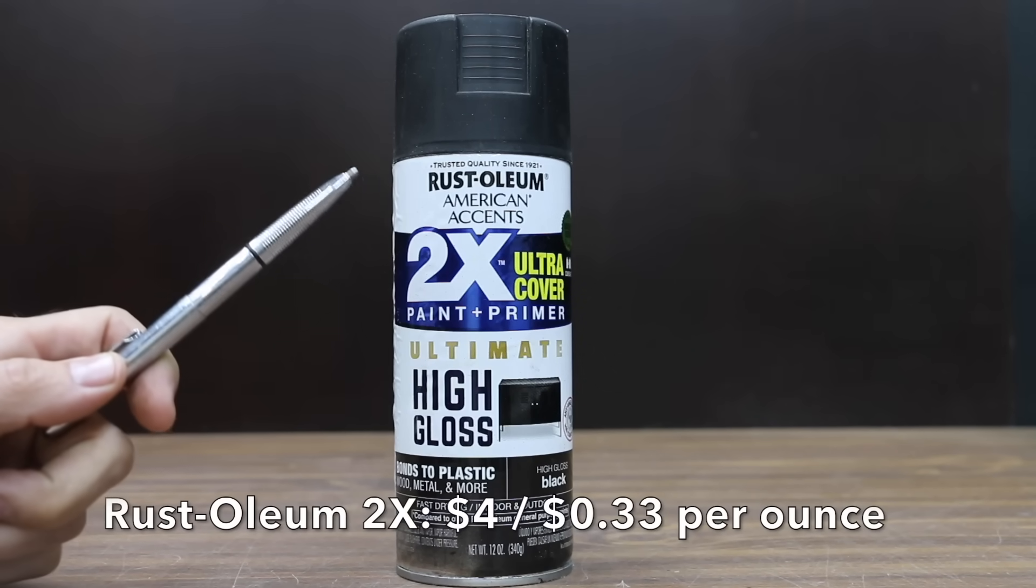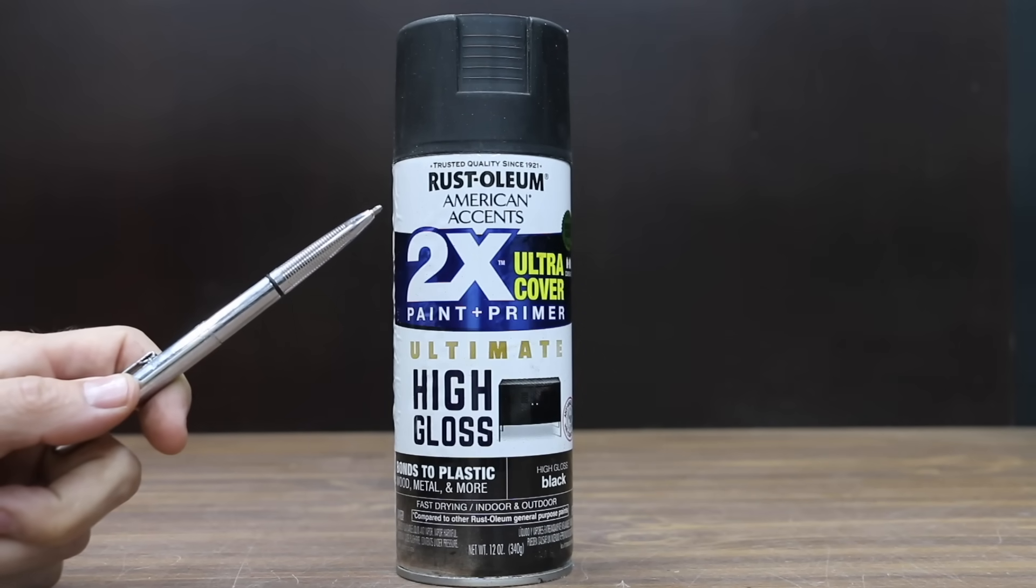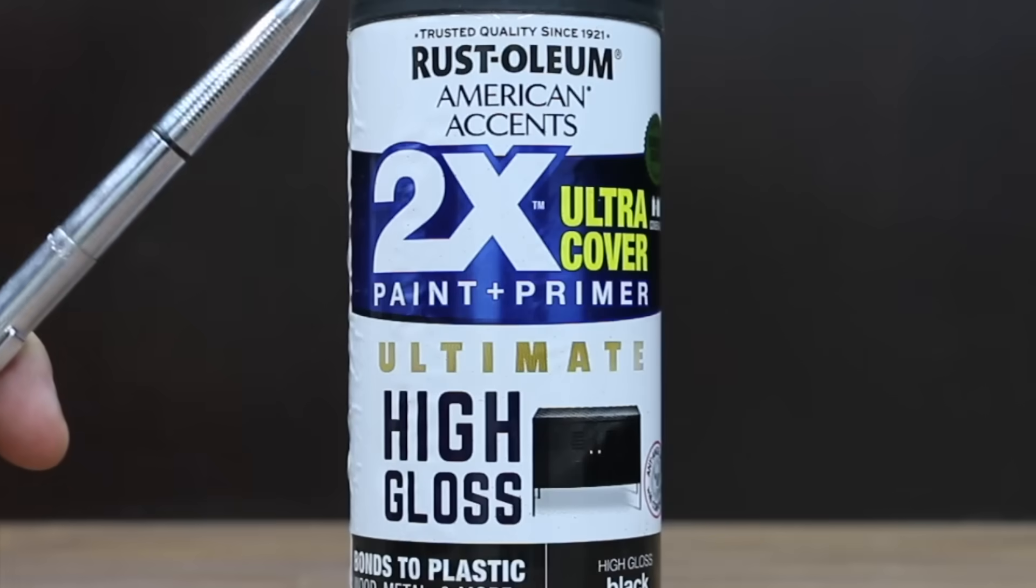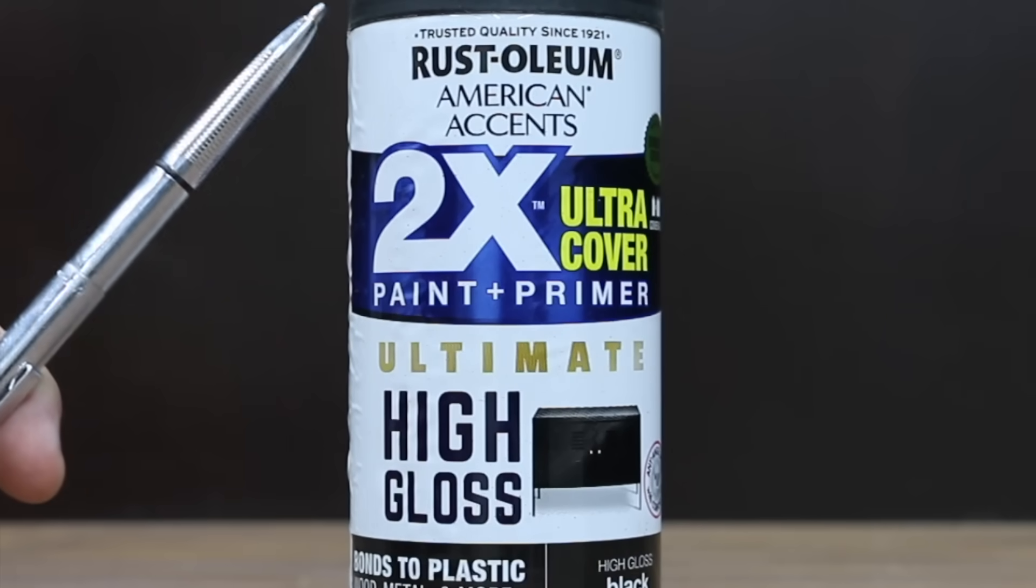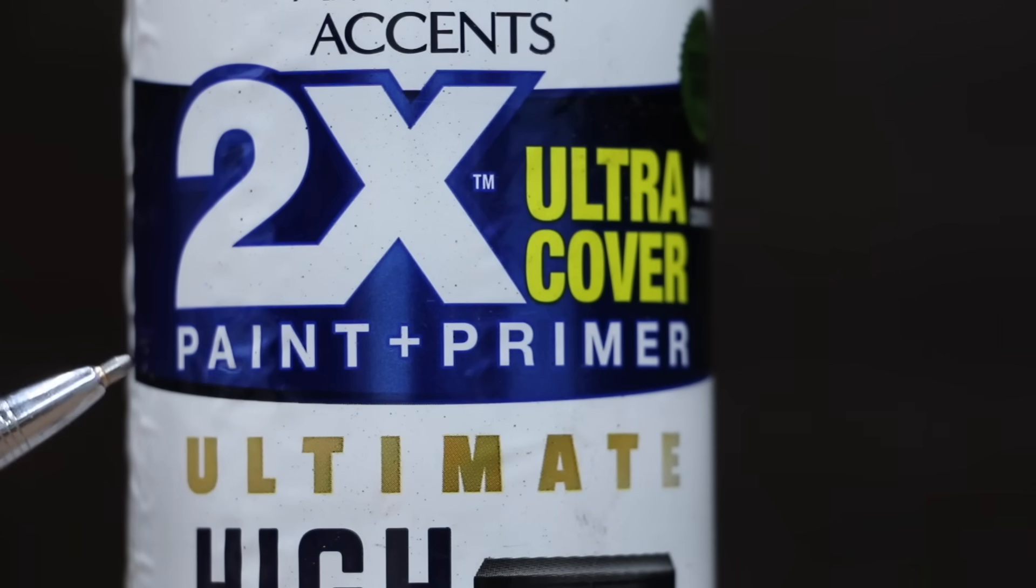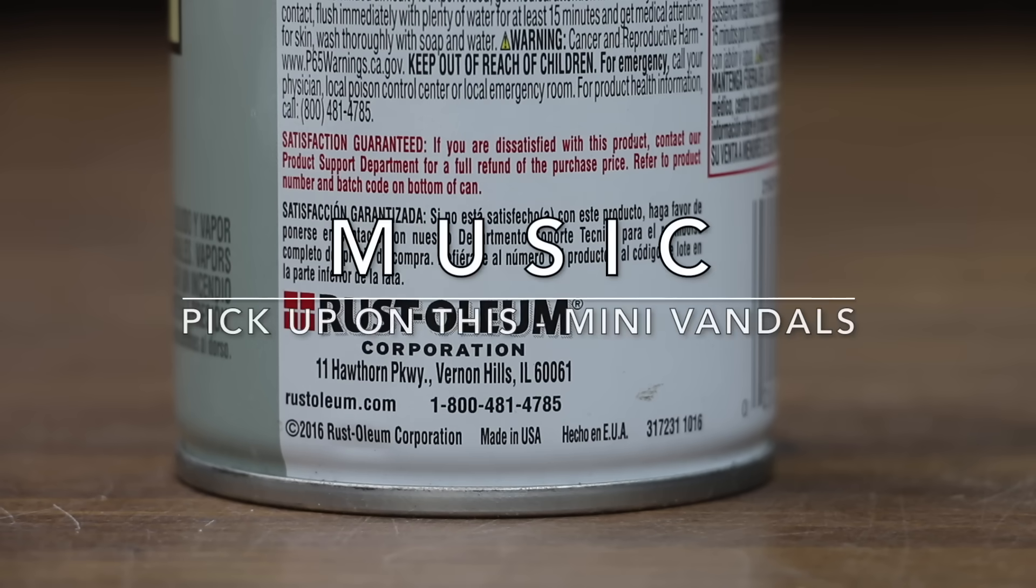The least expensive product we'll be testing is definitely not a rust converter, but rather a spray paint which we'll be using as a control. At only $4 for this 12 ounce can or 33 cents an ounce is this Rust-Oleum 2X. Rust-Oleum 2X claims to be both a paint as well as a primer. The Rust-Oleum 2X is made in USA.